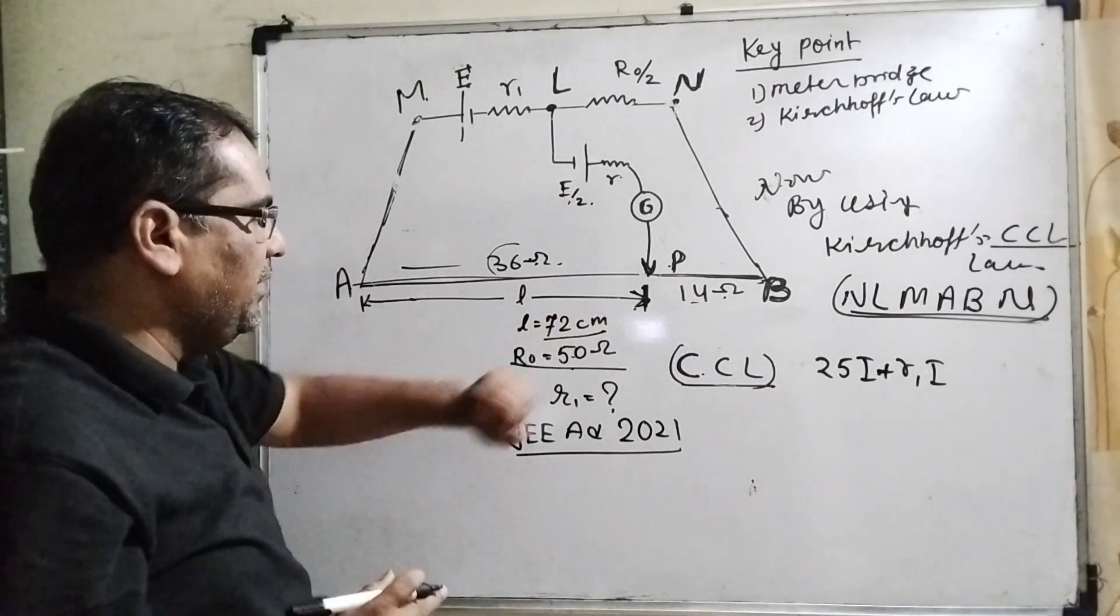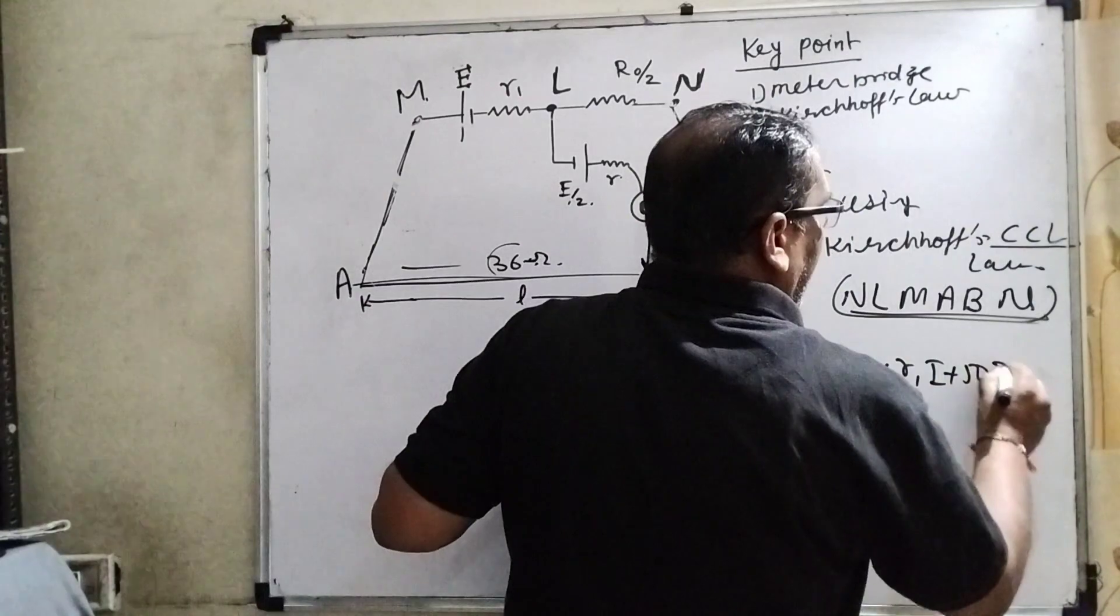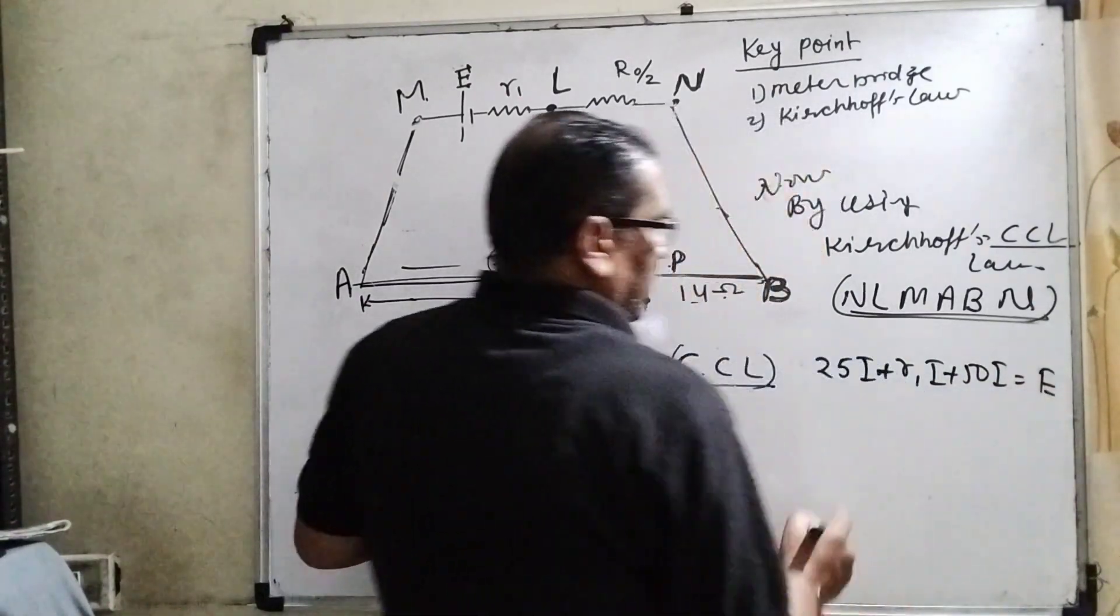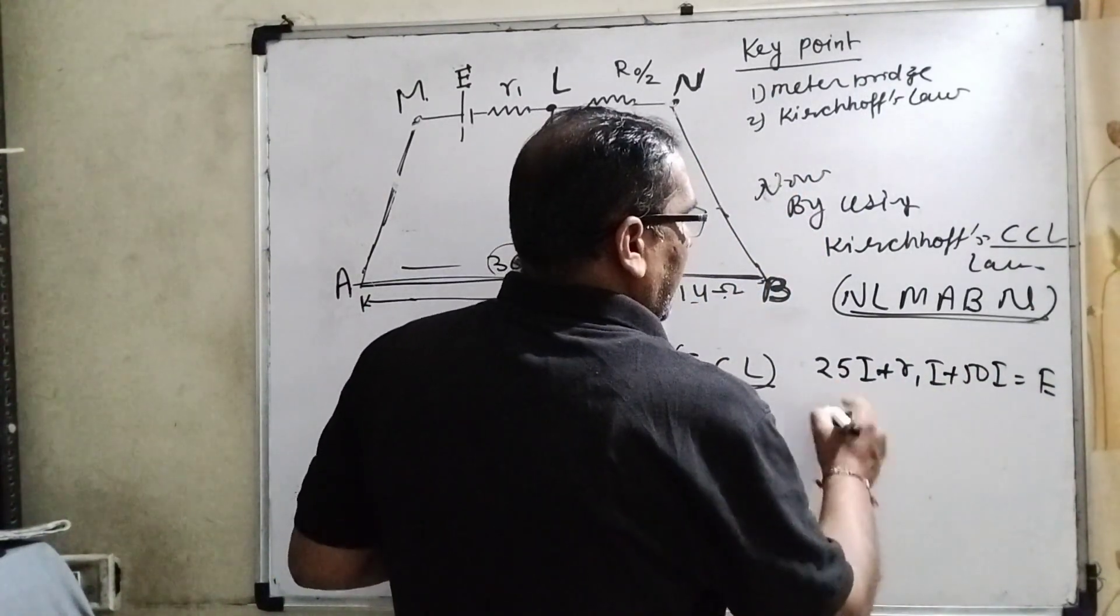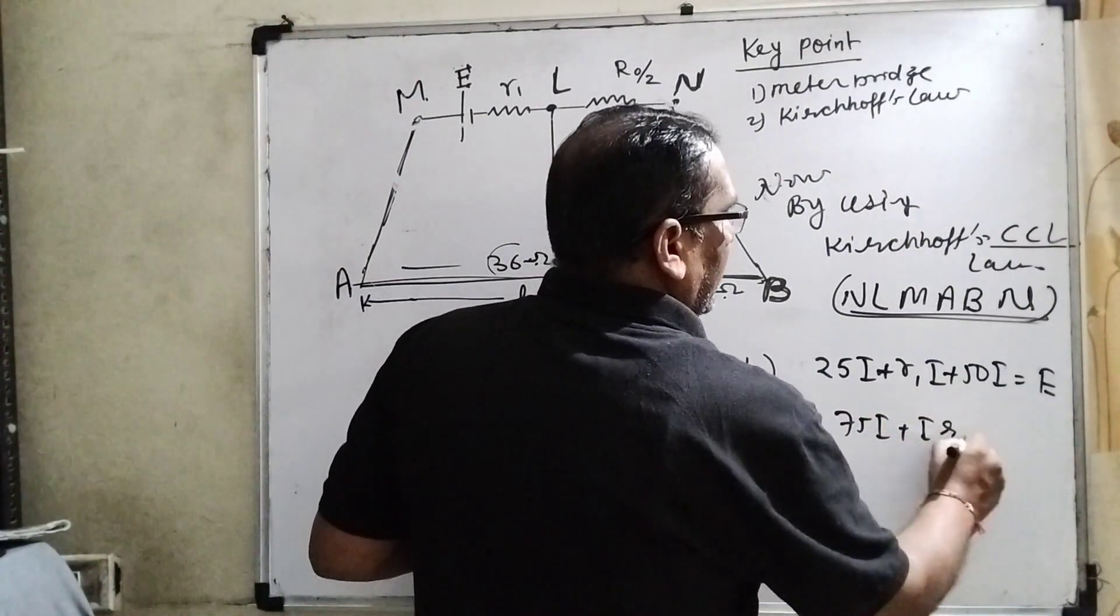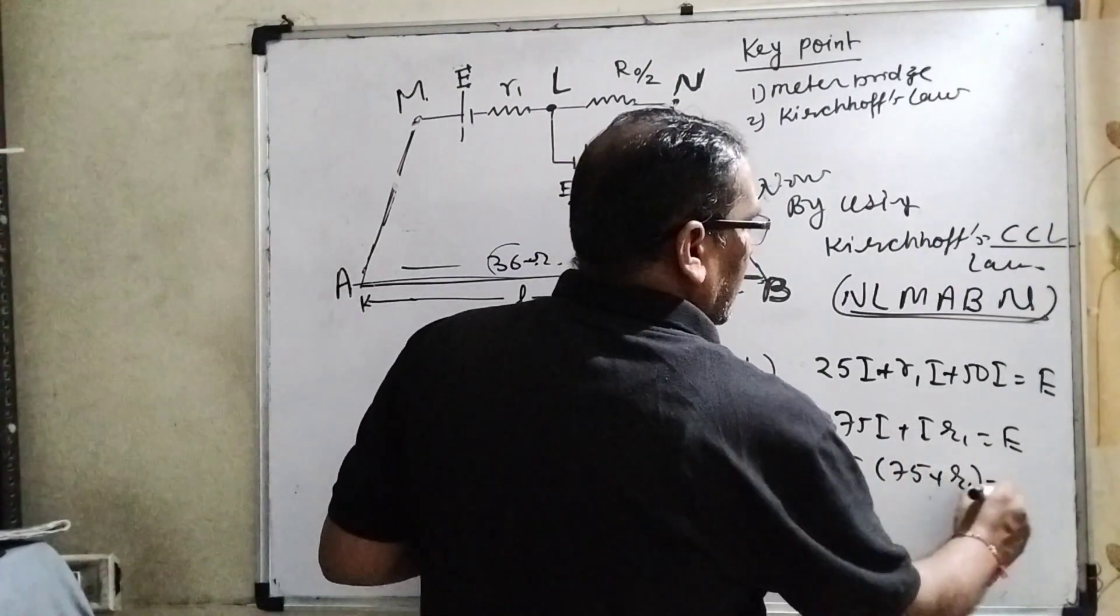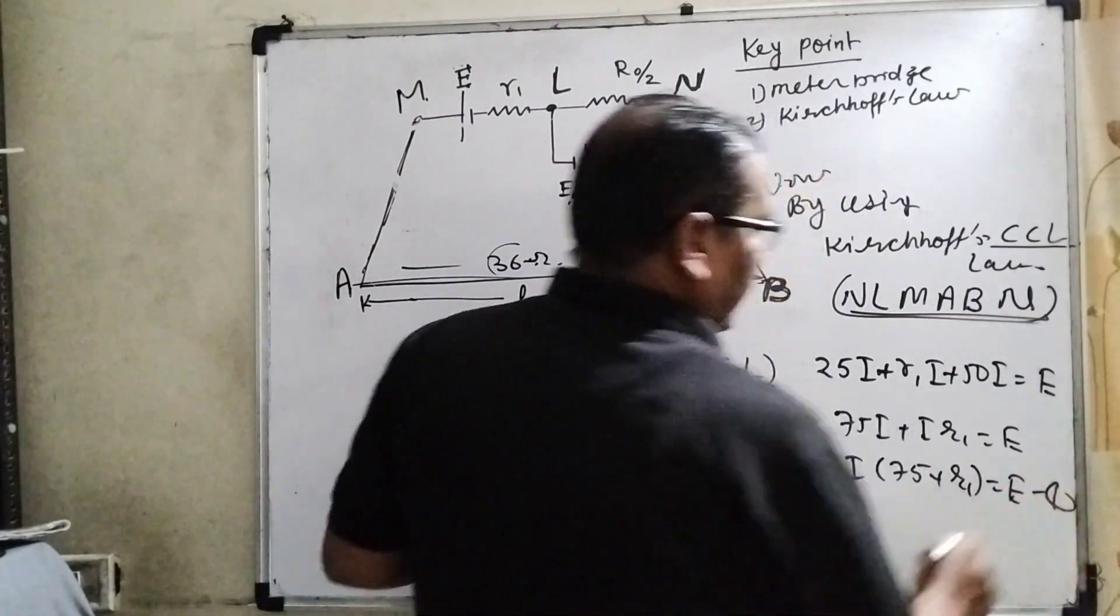We have to take total because we have taken this closed circuit law. So in path AB, the resistance is 50. 50I equal to E. 50 and 25 means 75I. So I times R1 equal to E, then I get common: I times (75 plus R1) equals E. This is the first equation.